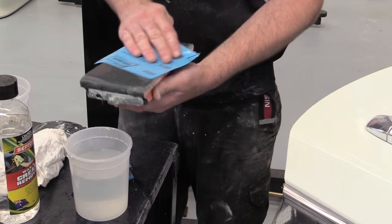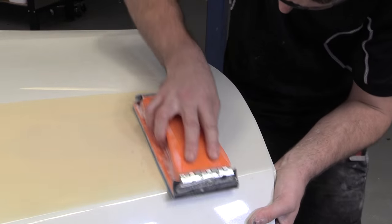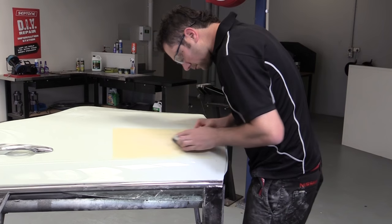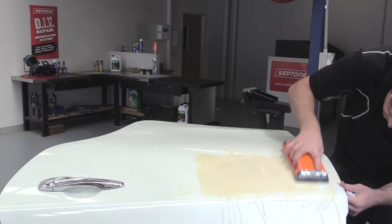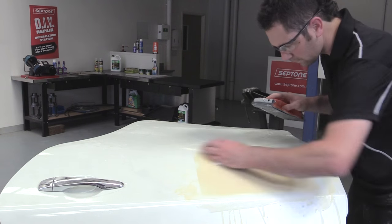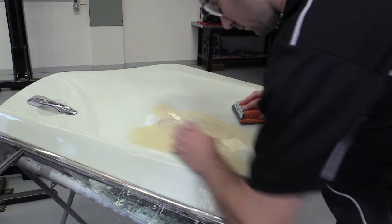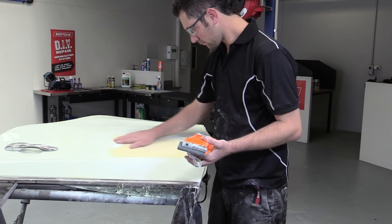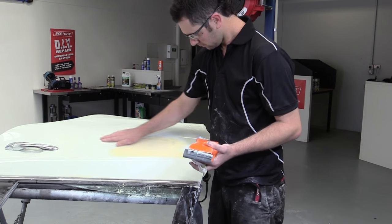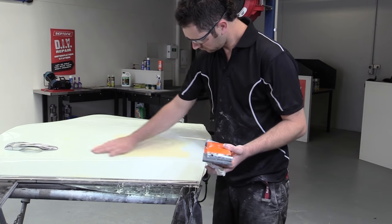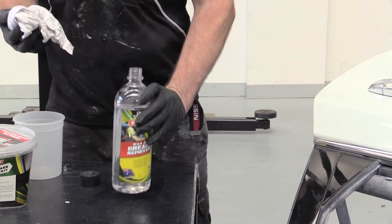Sand with 800 grit wet and dry paper to remove imperfections and sandpaper scratches from the repair process, followed by a second sand with 2000 grit wet and dry sandpaper. Ensure that you feather the edges with 2000 grit sandpaper. Use Septone wax and grease remover to clean the repair area.